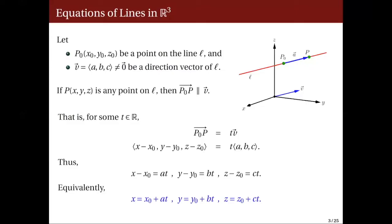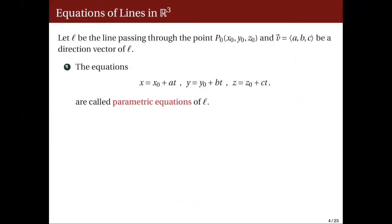Every point p on the line L has coordinates x, y, z expressed in terms of the coordinates of the known point, the components of a direction vector, and the parameter t. These three equations are called the parametric equations of the line L.